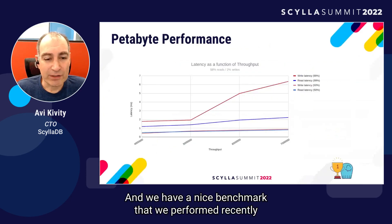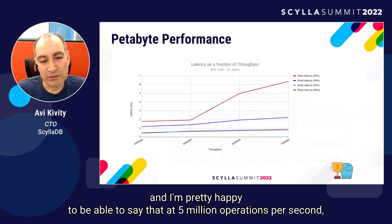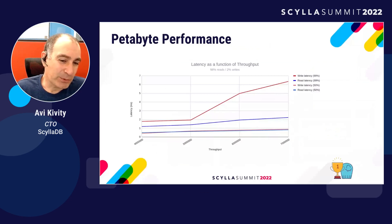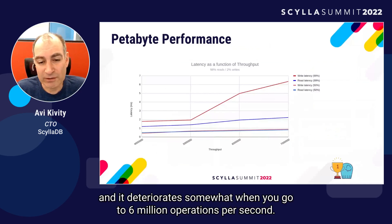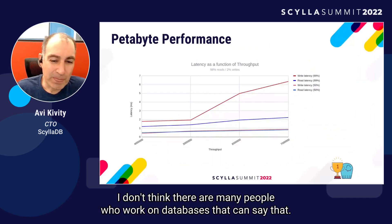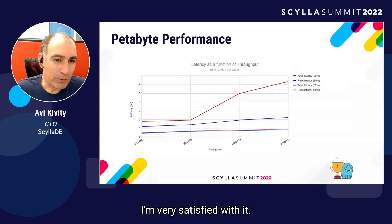We have a nice benchmark performed recently on a petabyte-scale data set. At 5 million operations per second, we get 2 millisecond 99th percentile latency. It deteriorates somewhat at 6 million operations per second, but I don't think there are many people working on databases who can say that. I'm very satisfied with it.